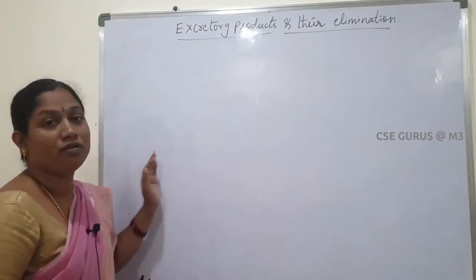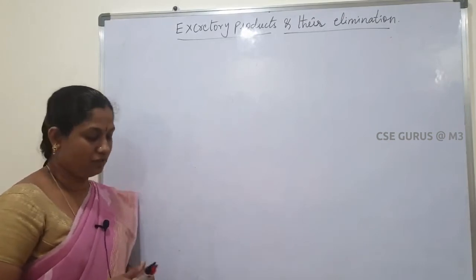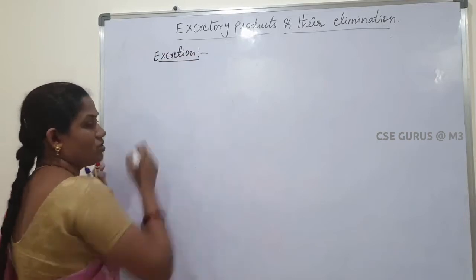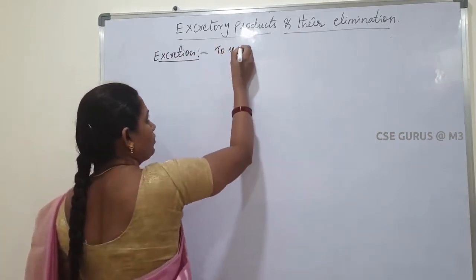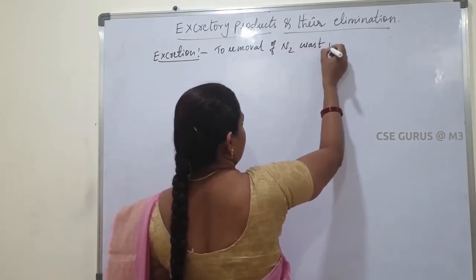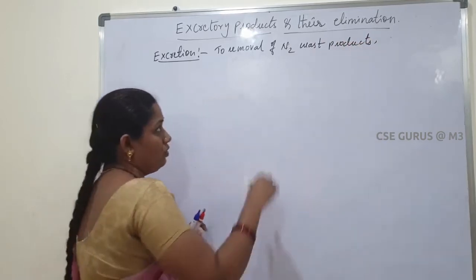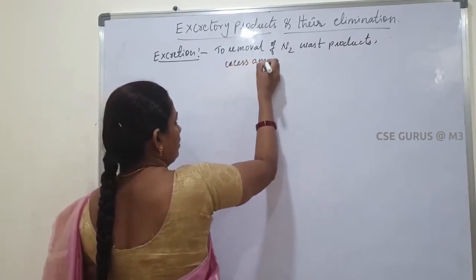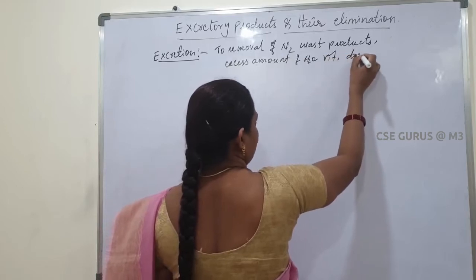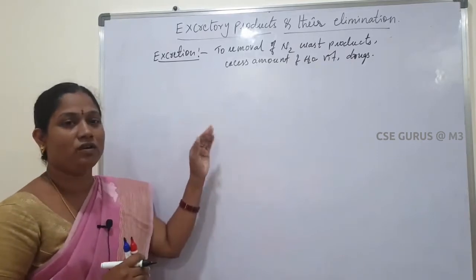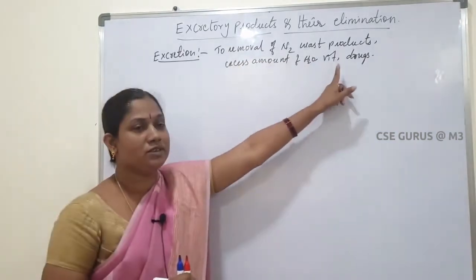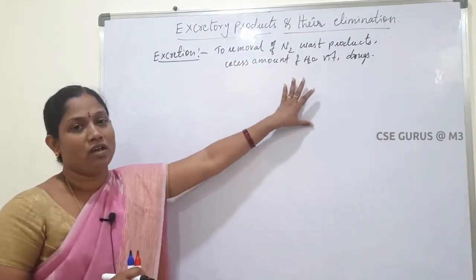Hello students, today I am going to teach about a new chapter: Excretory Products and Their Elimination. First of all, what is excretion? Excretion means the removal of nitrogenous waste products, excess amount of water, excess vitamins, and drugs. The elimination of these products from the body is called excretion.